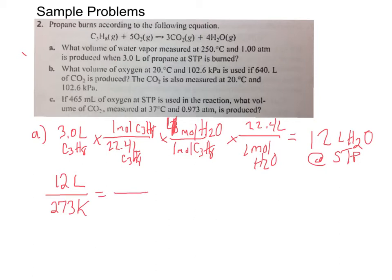So that's T1 equals X. That's what we're solving for. X liters or V2. And then 523 Kelvin, because remember you have to convert Celsius to Kelvin. That's the 250 Celsius change to it. And then you just do the math, and you find that it turns out to be 23 liters at 250 Celsius.